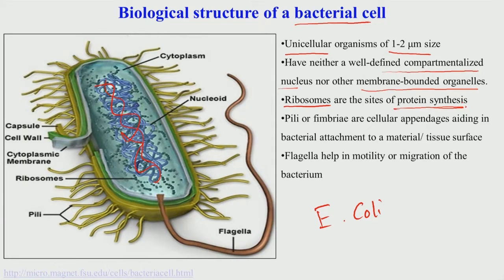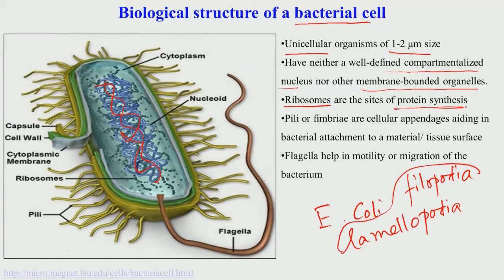In the context of cell migration, I have mentioned certain podia that eukaryotic cells have: filopodia and lamellipodia. These filopodia and lamellipodia help in cell motility or cell locomotion on a biomaterial substrate. Cell migration is somewhat analogous to a baby crawling on a floor, using both hands and legs. Similarly, in a eukaryotic cell, these podia help in cell migration.